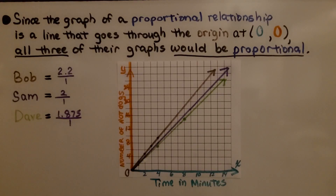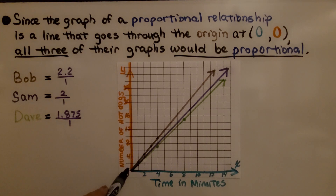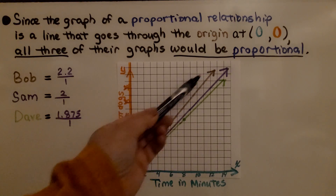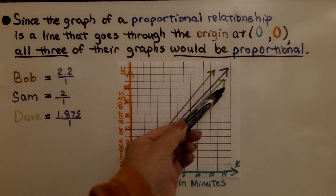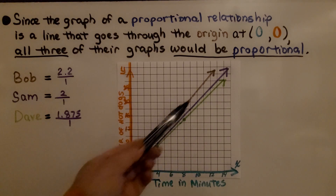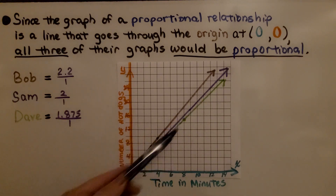Since the graph of a proportional relationship is a line that goes through the origin at (0, 0), all three of their graphs would be proportional — they all ate 0 hot dogs at 0 minutes. We can see Bob's graph in brown, Sam's in purple, and Dave's in lime green. Bob's line is the steepest because he ate the most hot dogs per minute, and Dave's is the least steep because he ate the fewest.